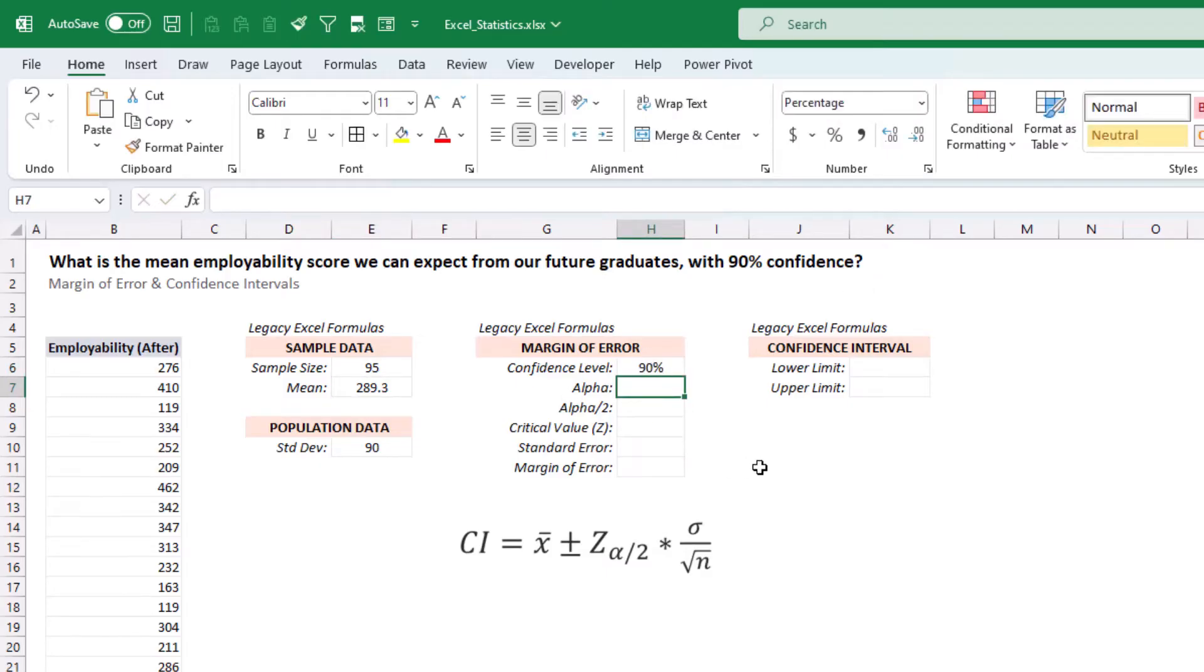Our level of alpha is going to be equal to 1 minus this confidence level. And alpha divided by 2 is alpha divided by 2, which in this case is 0.05 or 5%.